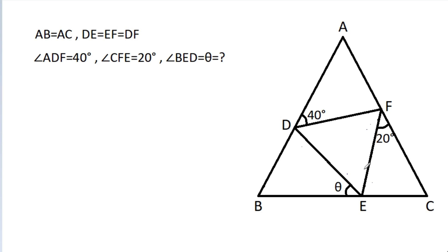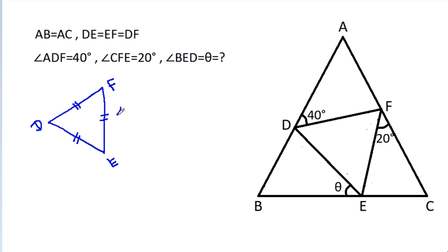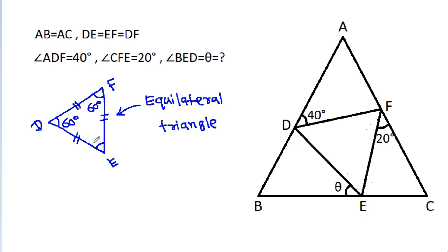In triangle DEF, DE is equal to EF is equal to DF, so it will be an equilateral triangle. Therefore all these angles will be 60 degrees.